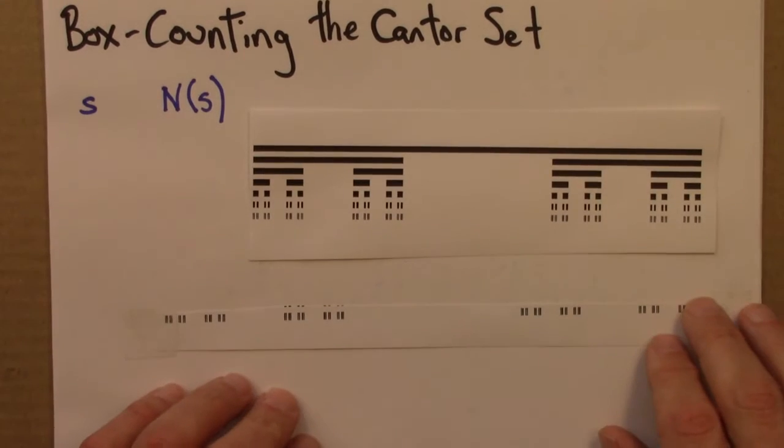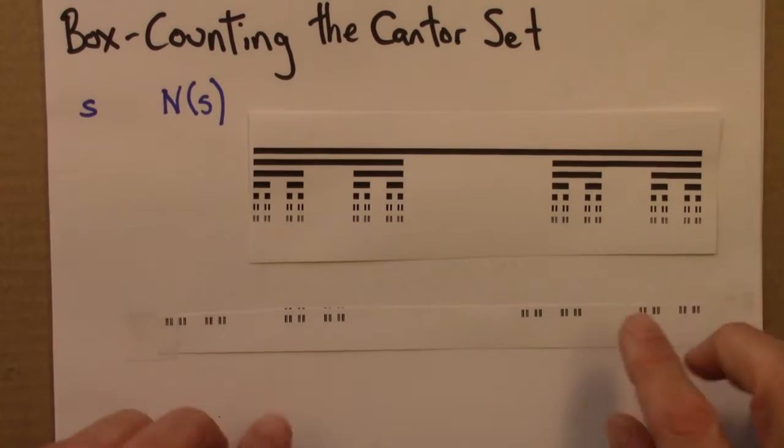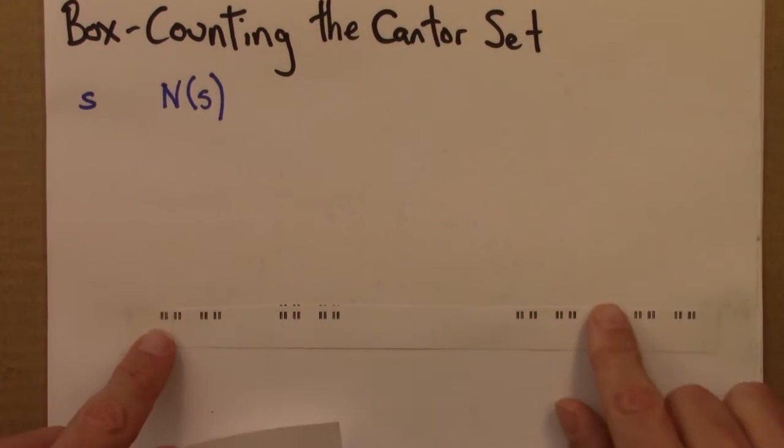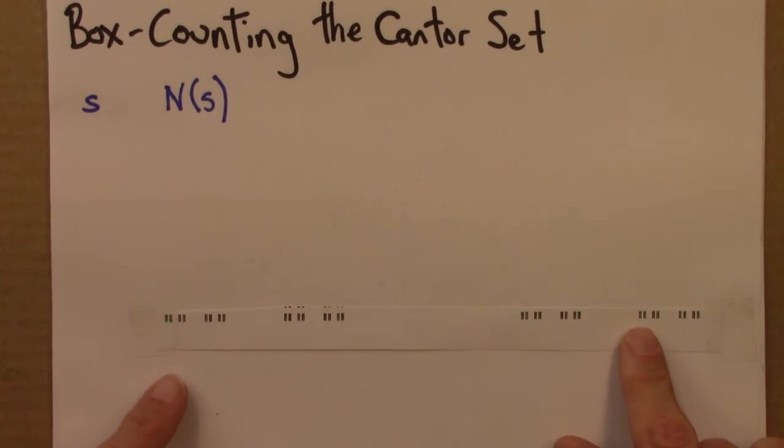So let's do box counting for the Cantor set, like you did in the last quiz. So here are the steps in the construction of the Cantor set, and here is a somewhat enlarged version of that last step.